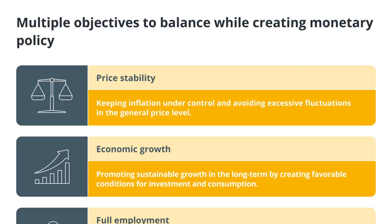Contractionary monetary policy aims to decrease the money supply and control inflation. Raising interest rates, reducing the money supply, and boosting reserve requirements can all be used to achieve this.